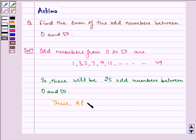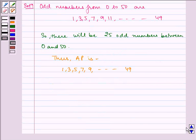Thus, the AP is 1, 3, 5, 7, 9 and so on till 49. Here, A is equal to 1, D is equal to 3 minus 1 which is equal to 2, and N is equal to 25.